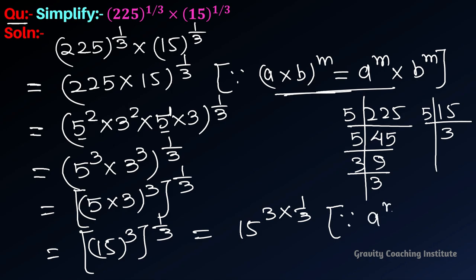Since a to the power m whole to the power n equals a to the power m into n, 3 and 3 cancel to give 15, which is the required answer.